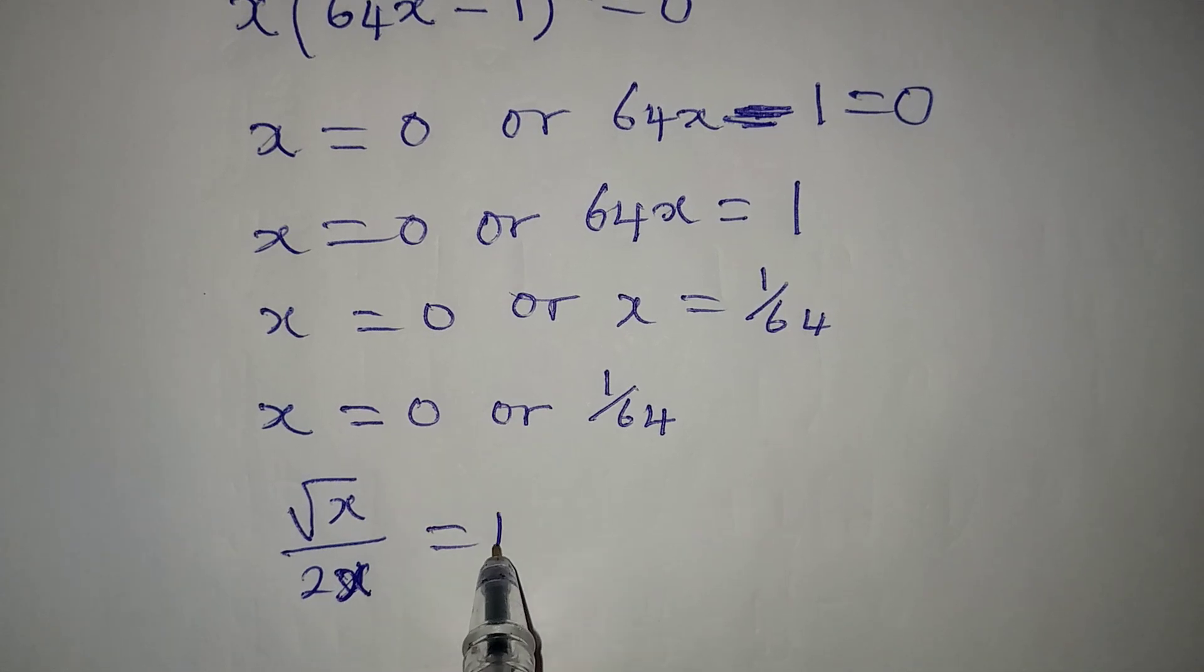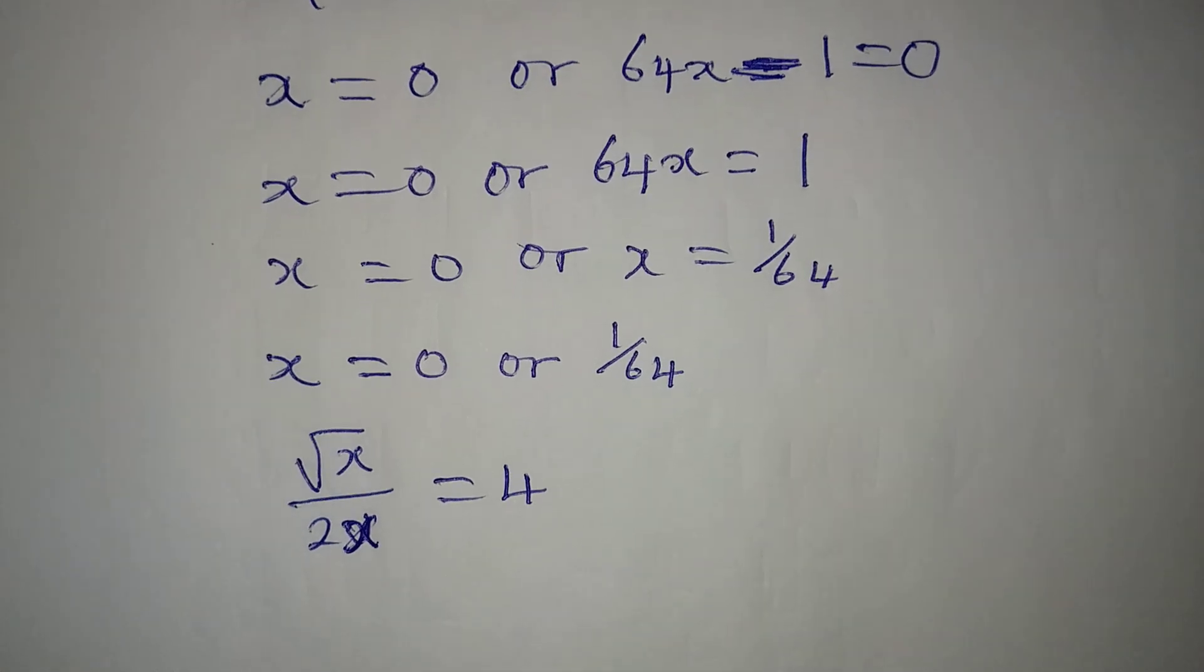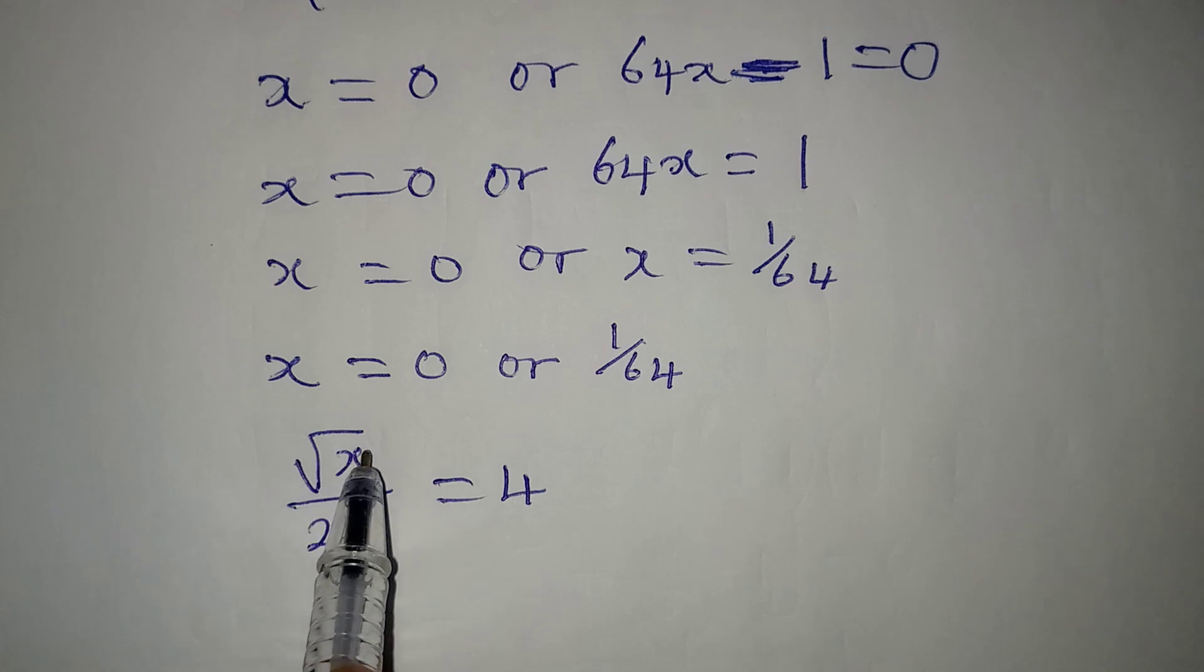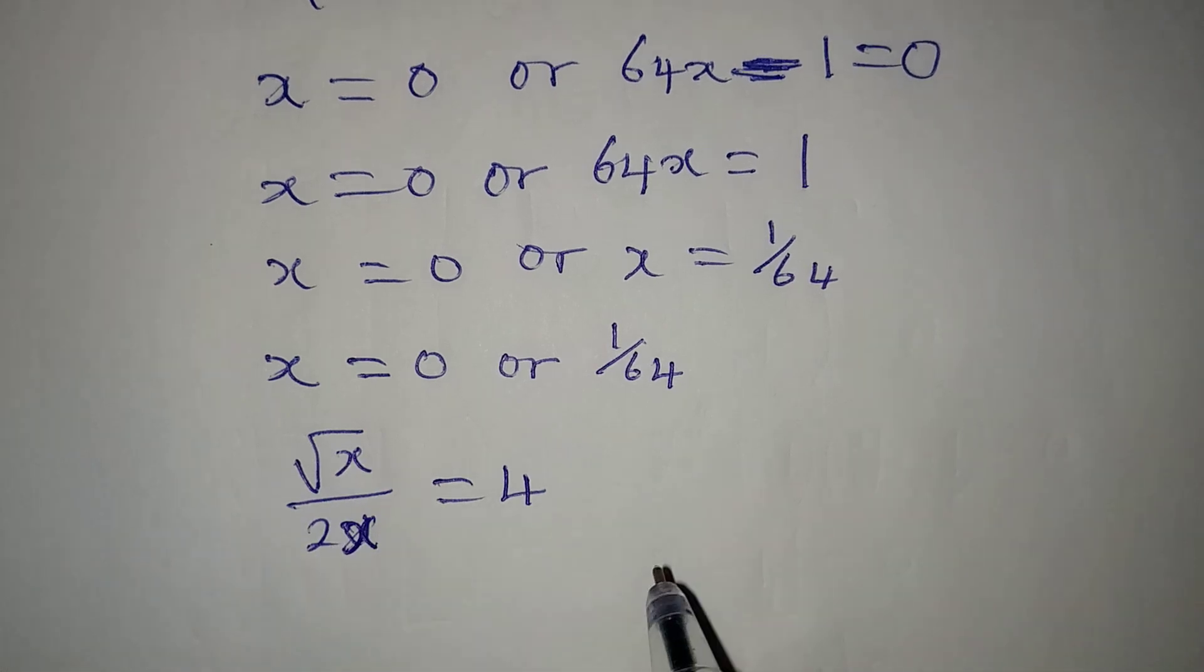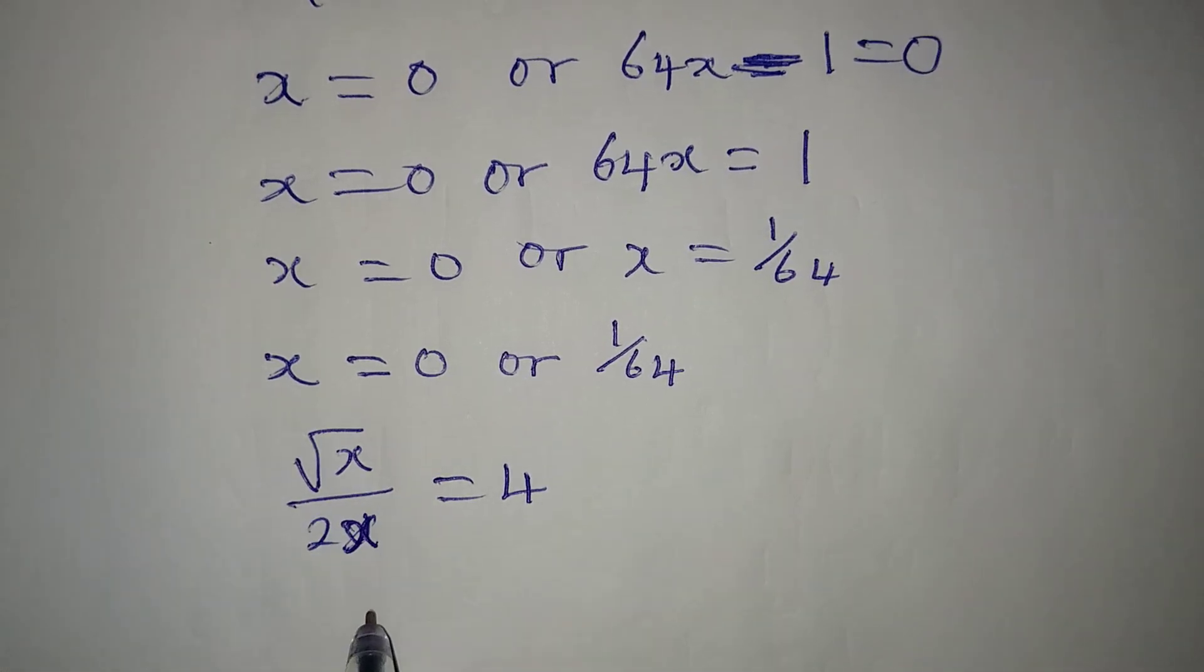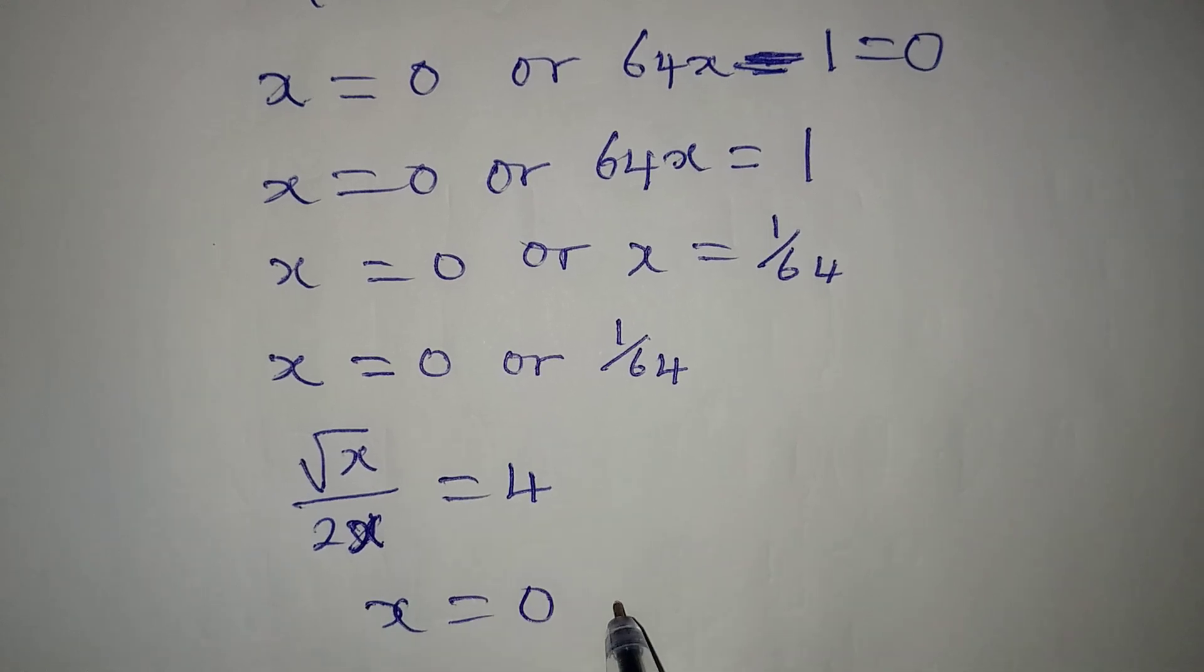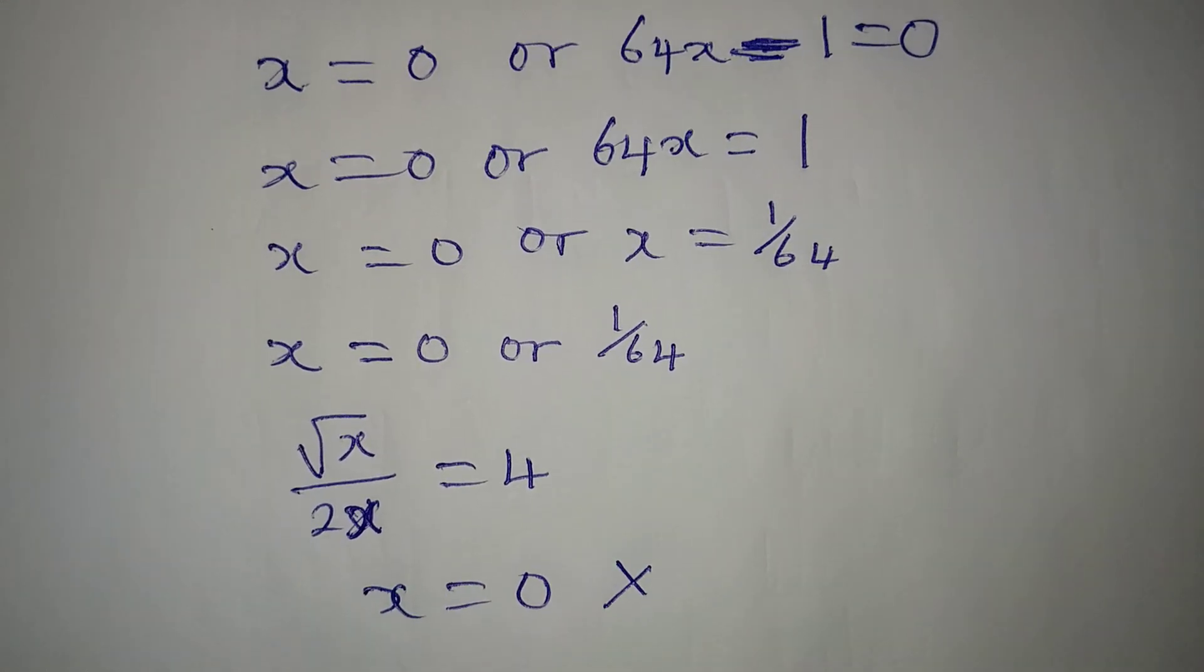If you put 0 in here, then you're going to have square root of 0 over 2 times 0, and it means that 0 over 0 is not satisfying the equation.